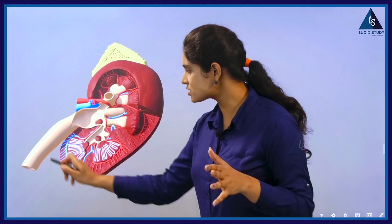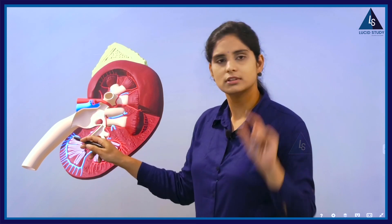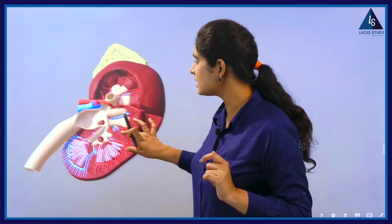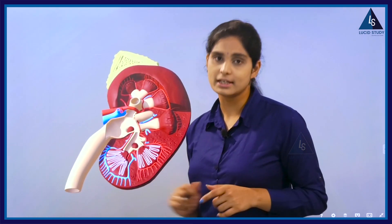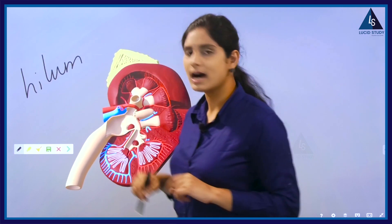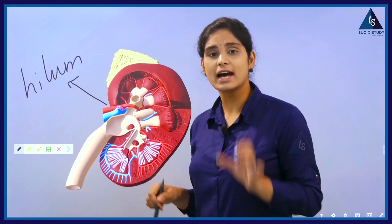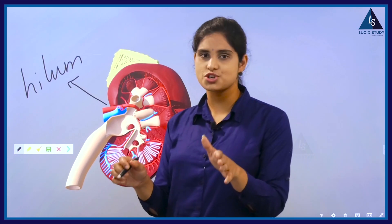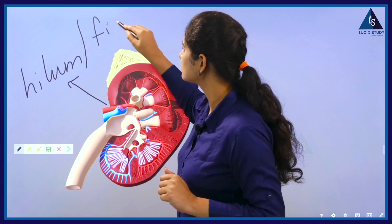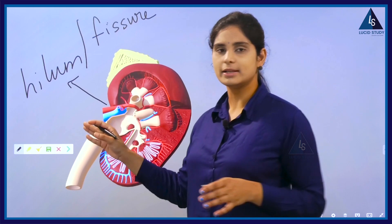Now, if we talk about external features — can you see a small curve here? This curve we call it as hilum, H-I-L-U-M. This hilum is also called as fissure.